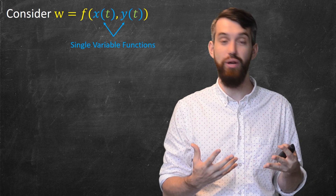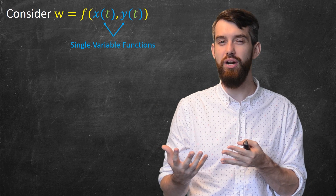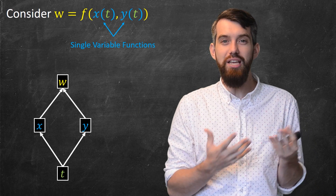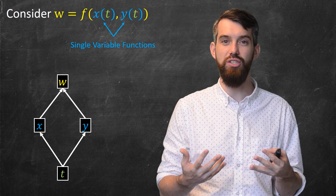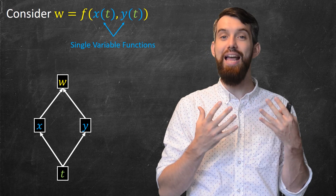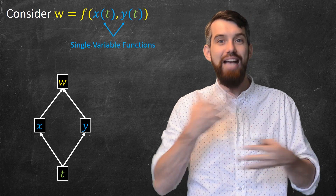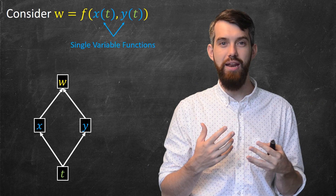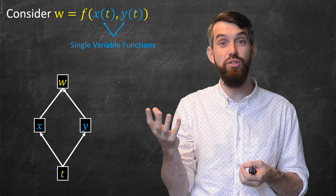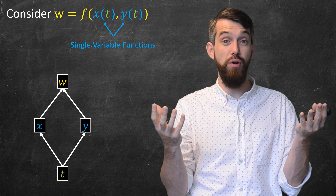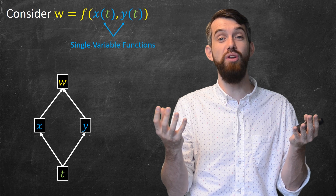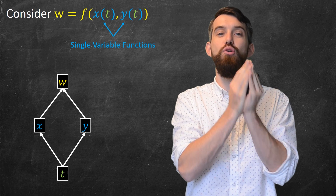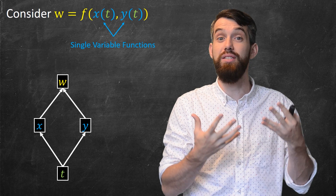To keep track of all of this pictorially, one thing we can draw is something called a dependency diagram. The idea of a dependency diagram is it tells you how the variables are related. Right down at the bottom I have the input t. As you change t, x depends on t and y depends on t — both are dependent variables that change based on the independent variable t. And finally, as x and y change, w is going to change as well because w depends on x and y.